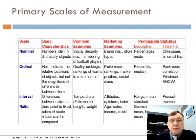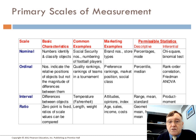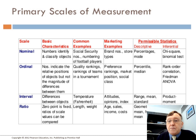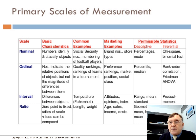Here we have the scales of measurement. For nominal scale, the basic characteristics are that numbers identify and classify objects. Common examples might be social security numbers or numbers of football players. Marketing examples include brand numbers and store types. Permissible statistics are descriptive percentages and the mode; for inferential statistics, the chi-square or binomial test.